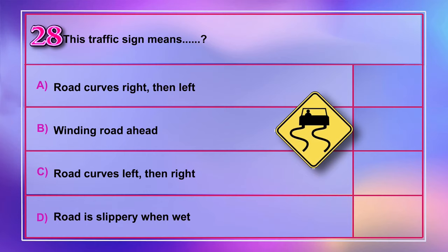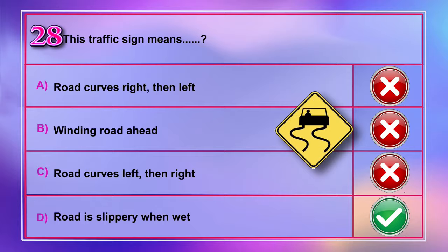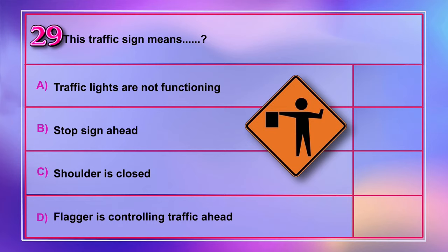Question number 29: This traffic sign means A) traffic lights are not functioning, B) stop sign ahead, C) shoulder is closed, D) flagger is controlling traffic ahead.